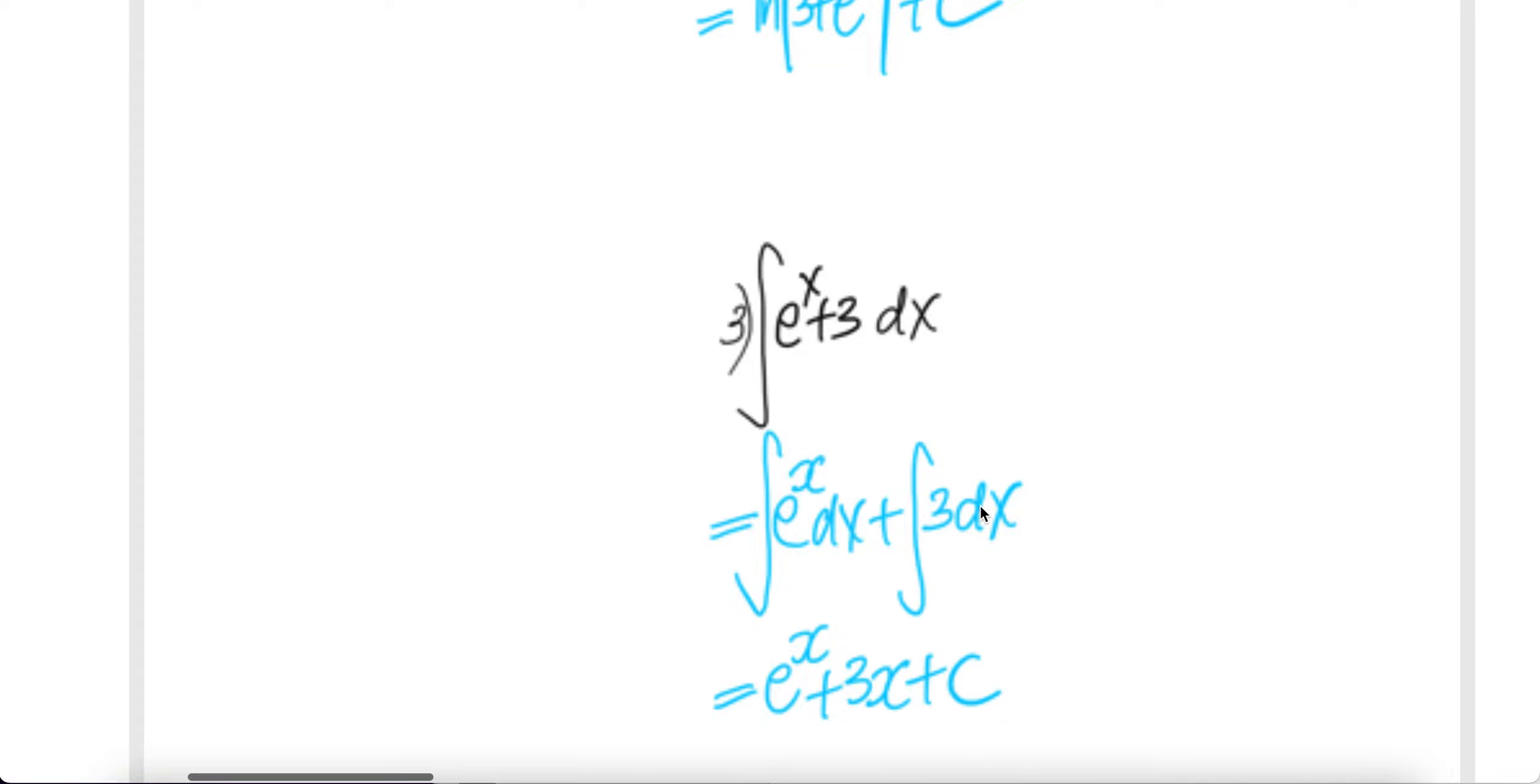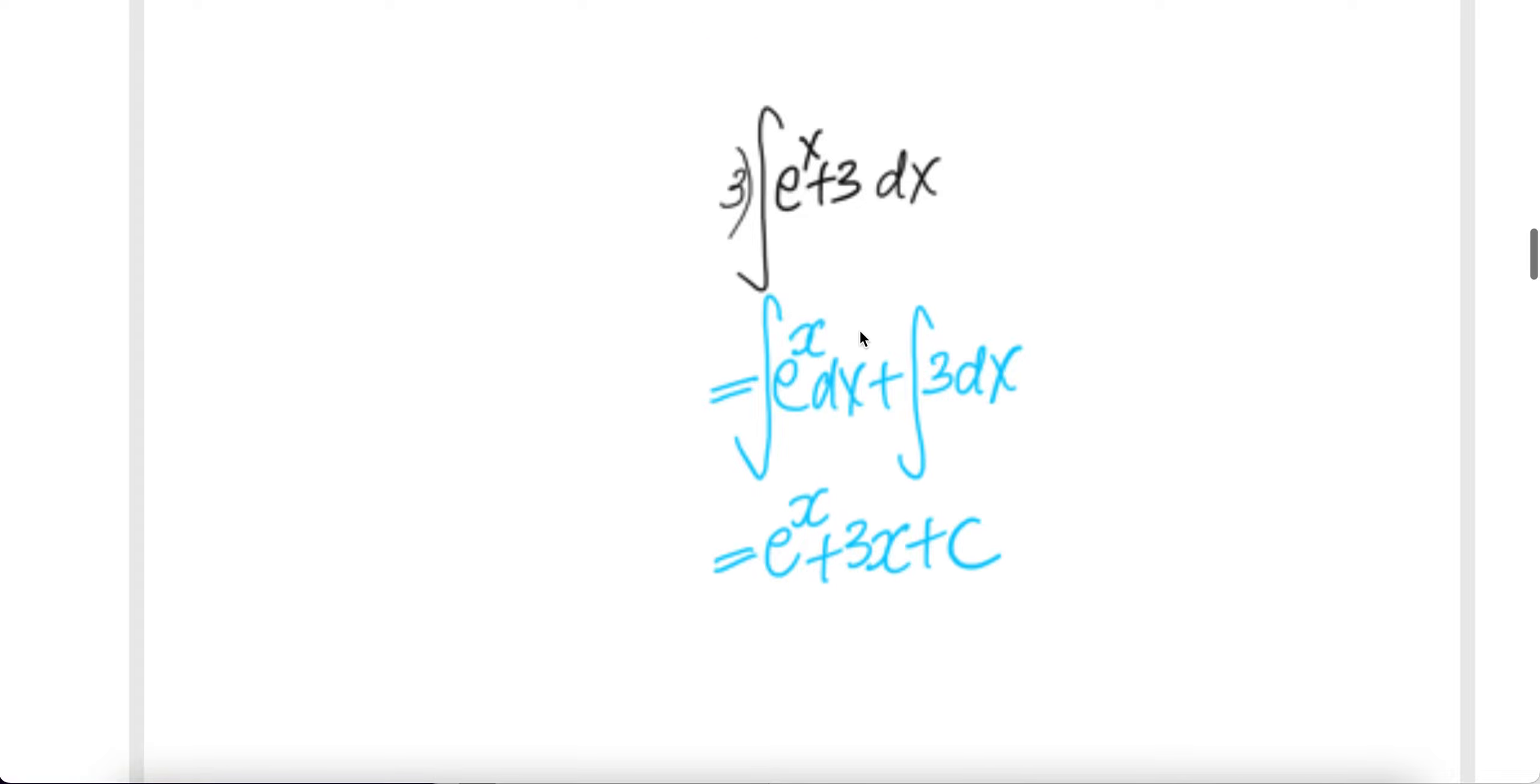Integral sum is sum of integral. Integral of this is e to the power of x. Integral of this is 3 comes out. Integral of dx is x plus C.